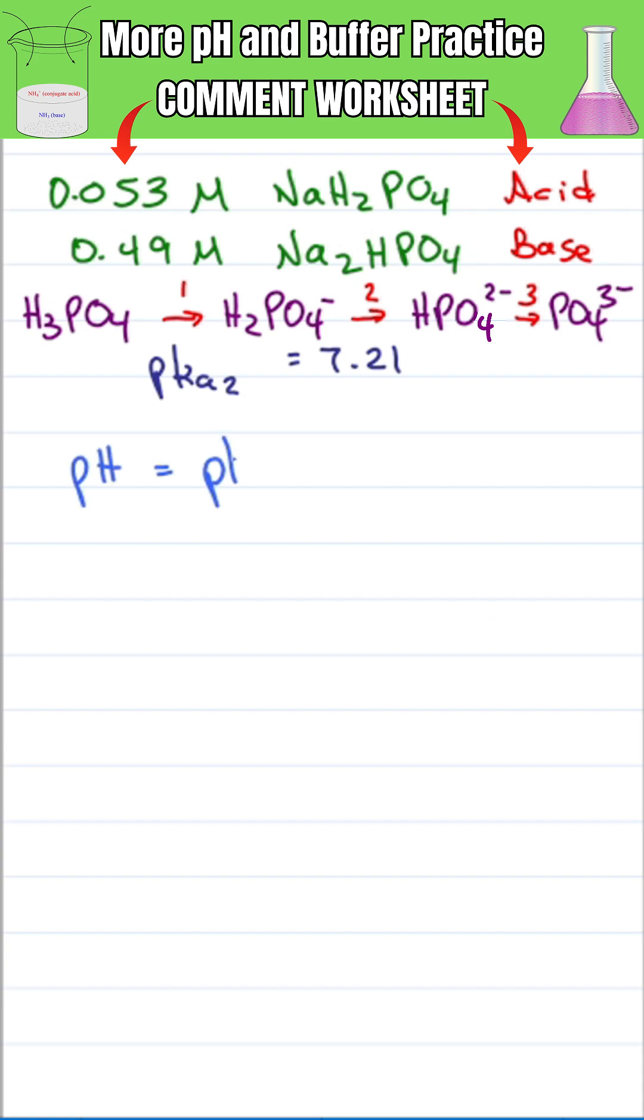pH equals pKa plus the log of conjugate base over acid, which equals pKa2 of 7.21 plus the log of 0.49 divided by 0.053.